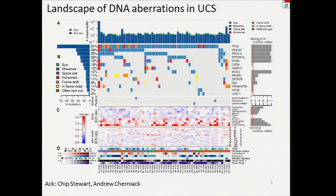Here is the landscape of DNA aberrations we found in UCS. There are quite a few copy number variations, and mutations in many different genes. The top mutated gene is TP53, followed by FBXW7, PIK3CA, and others. TP53 is mutated at a rate of 91% across all samples, whereas FBXW7 and PIK3CA are mutated at 39% and 35% respectively.